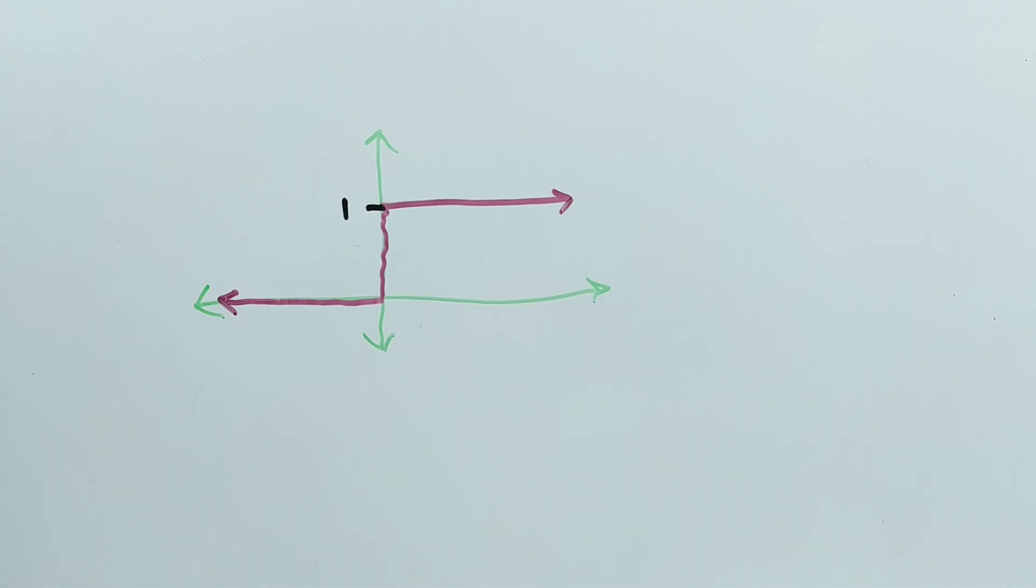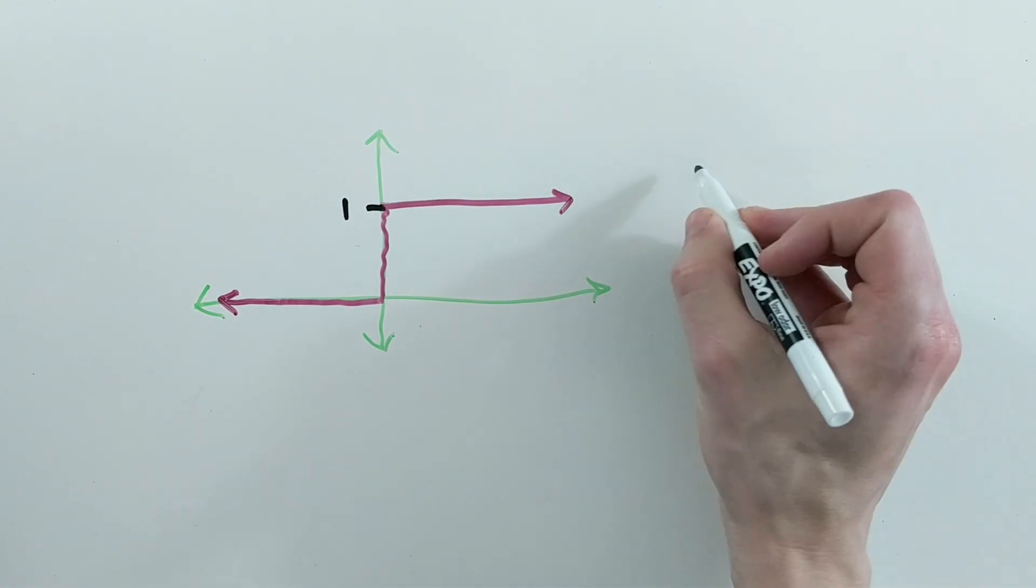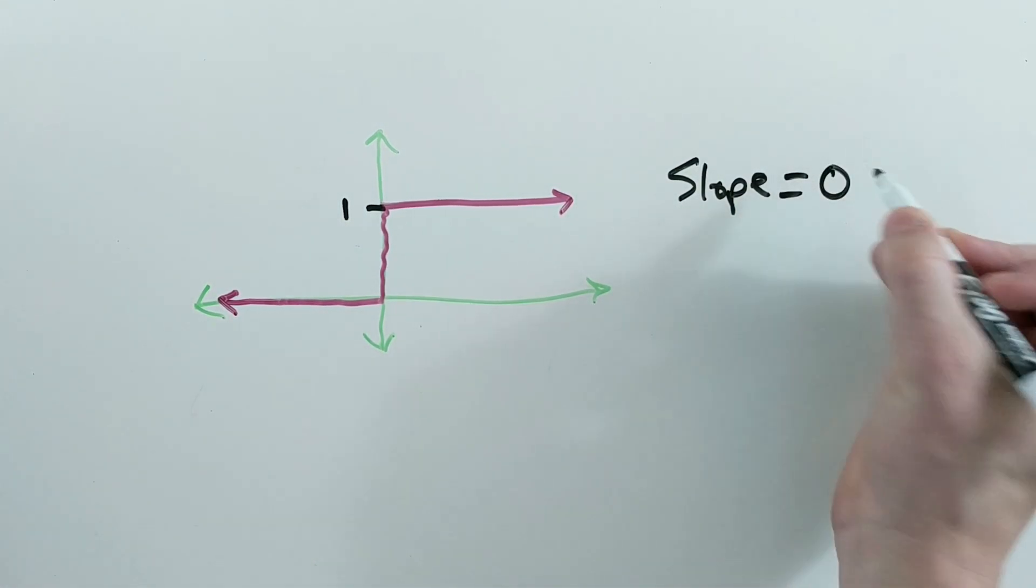The problem we have here is that gradient-based methods can't use it to learn because it's not differentiable at 0 and the slope is 0 at all other values.